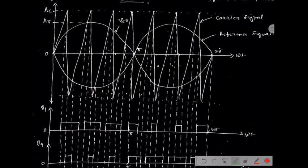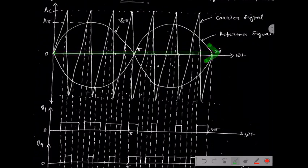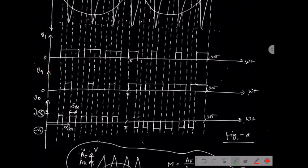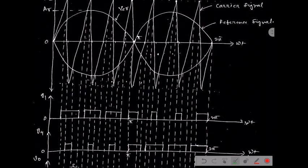In pulse width modulation, the gate pulse applied to the appropriate switch for inverter operation — G1 and G4 — are connected in series. We can never apply the gate pulse to both switches simultaneously, as it would create a short circuit path. To avoid this, G1 should be applicable for the positive half and G4 for the negative half of the inverter operation. That is why we take two sinusoidal signals: one in the forward direction and one in the negative direction.